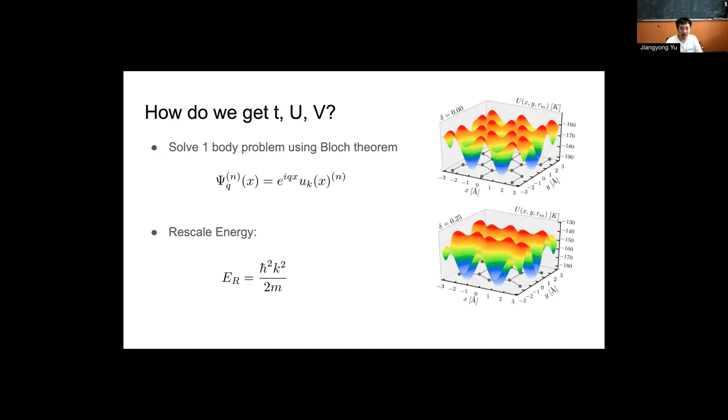Also, once we are getting all these results, we're essentially rescaling everything by the recoil energy here, E sub r, which is h bar squared k squared, which is momentum over 2m.